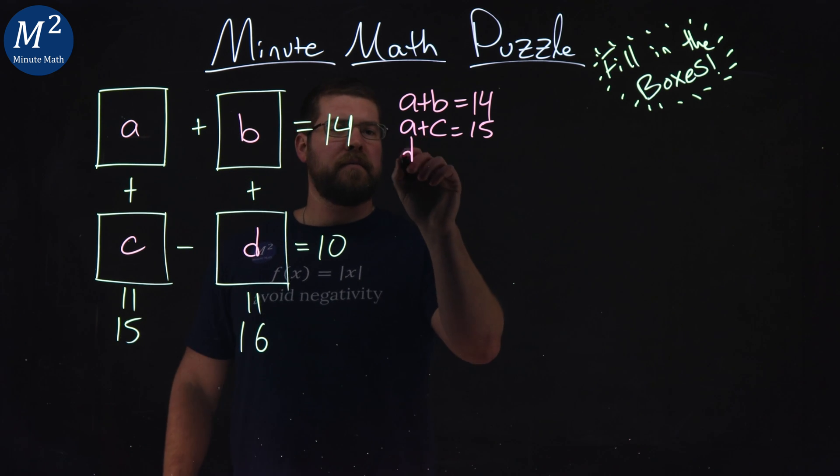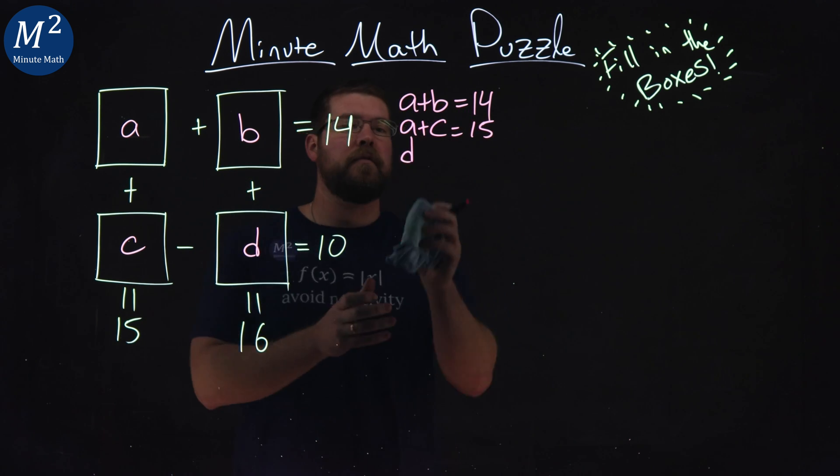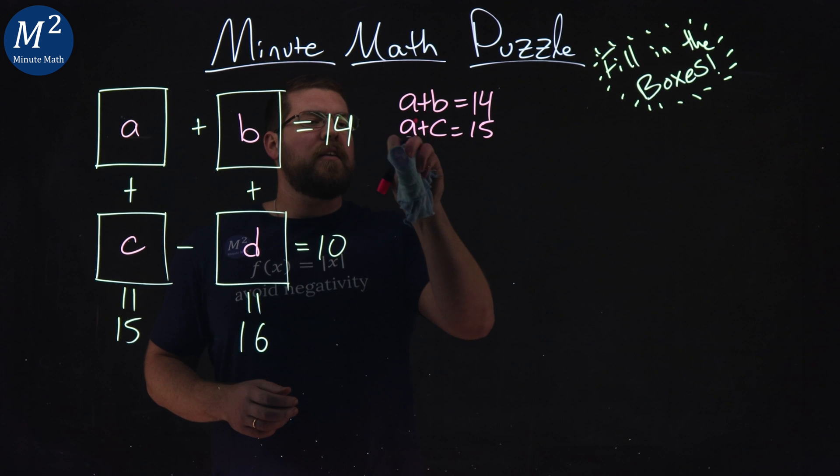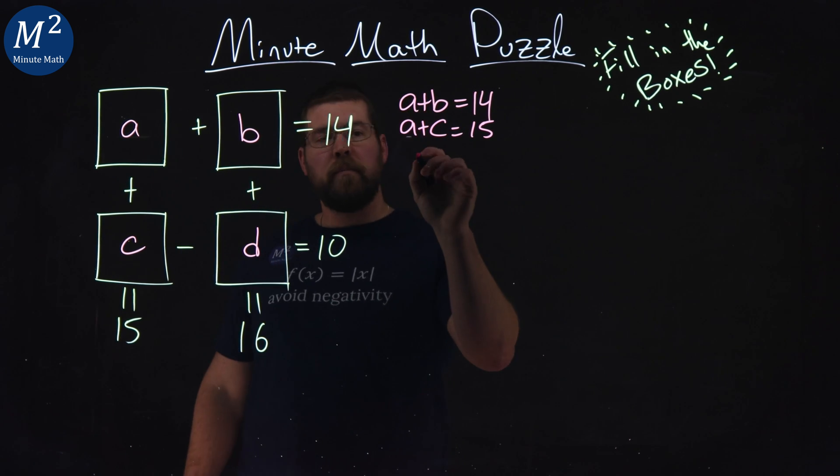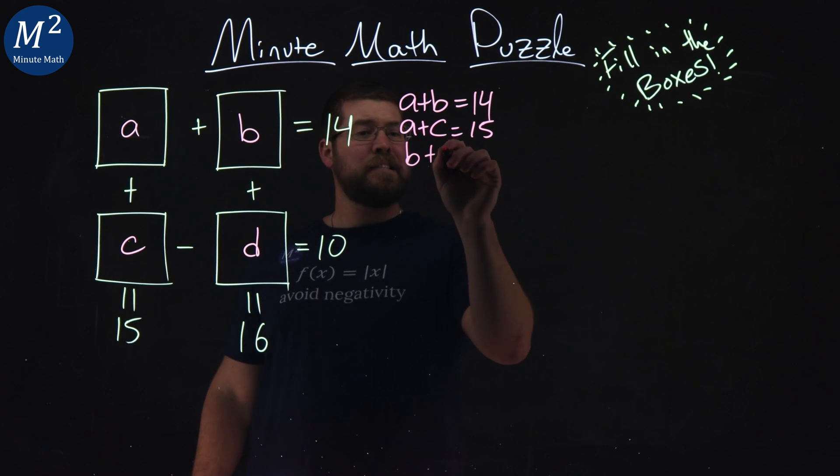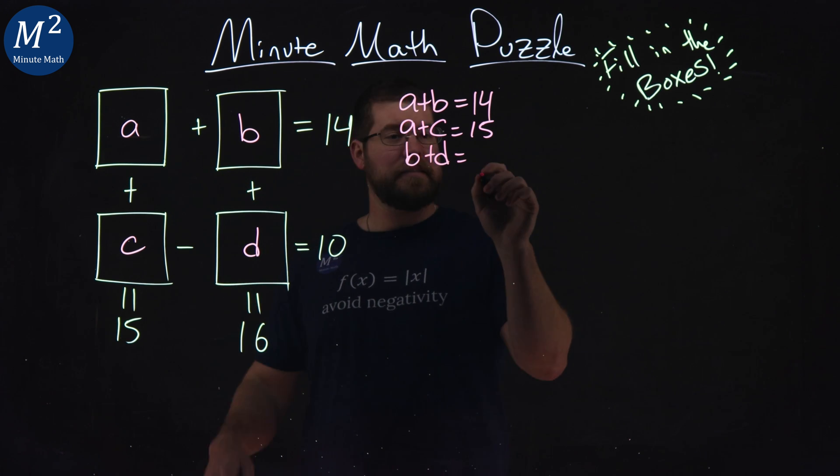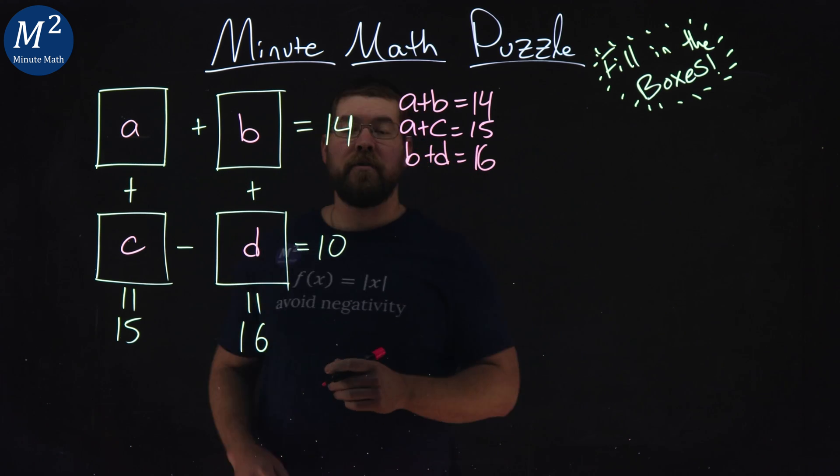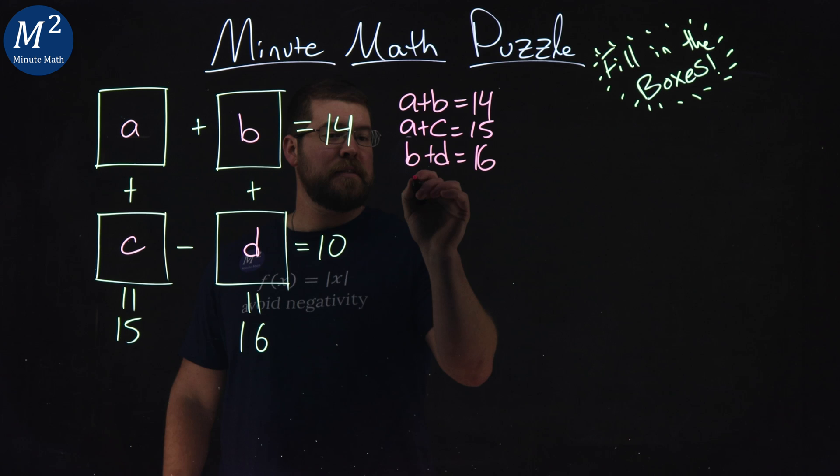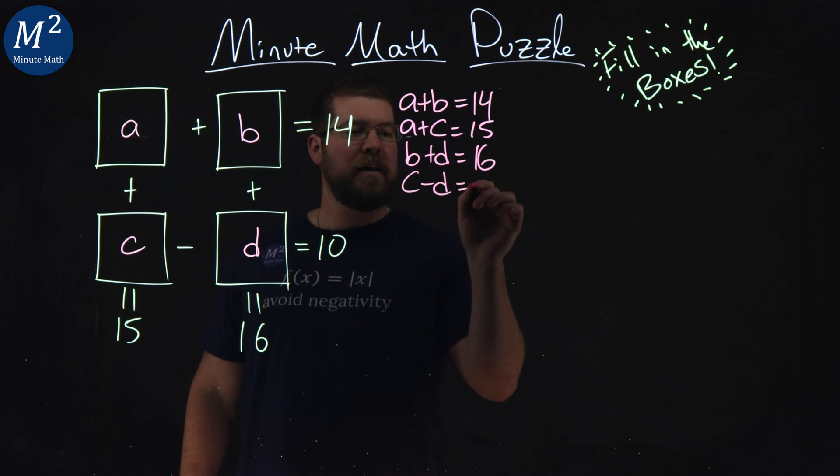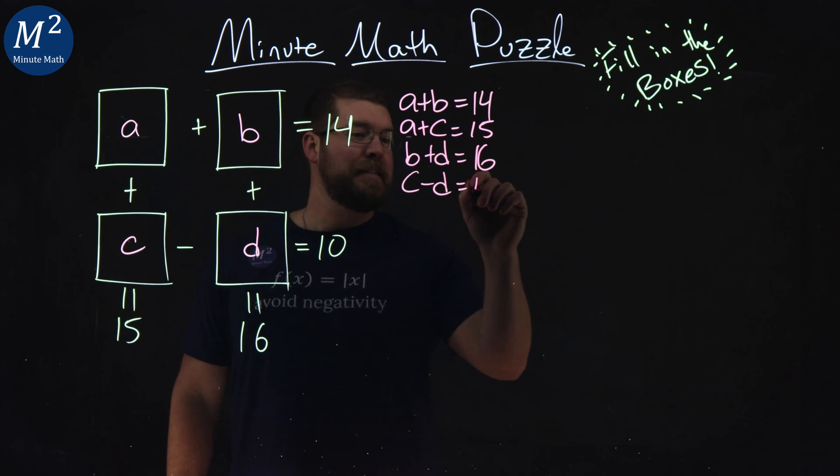A plus C is equal to 15. B plus D is equal to 16. And last but certainly not least, the only subtraction, C minus D is equal to 10.